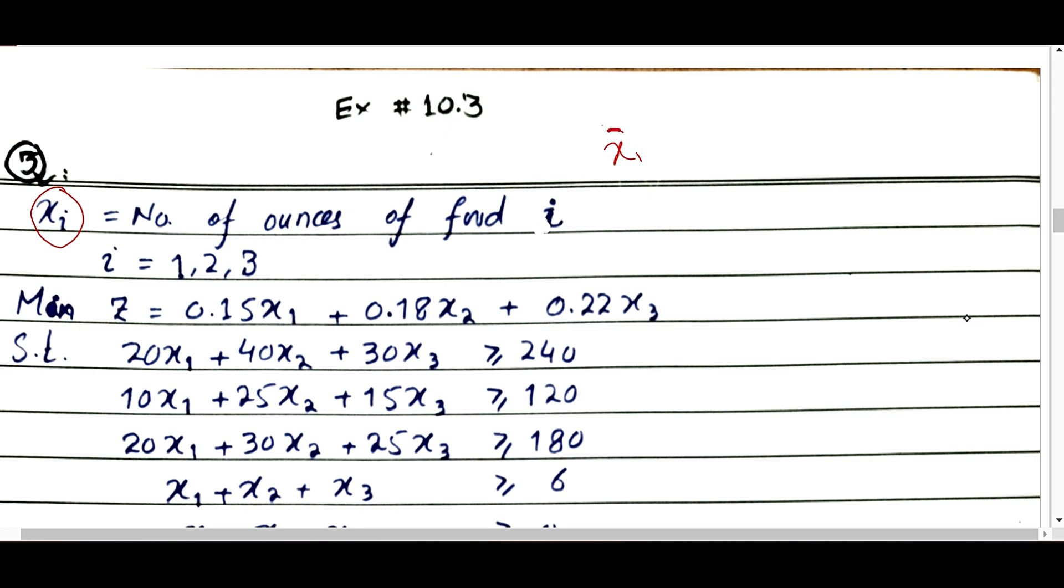x1 costs 0.15, so if we take x1 ounces of food one, the cost will be 0.15 times x1. Similarly, one ounce of food two costs 0.18, so if we take x2 ounces of food two, how much will the cost be? 0.18 x2.